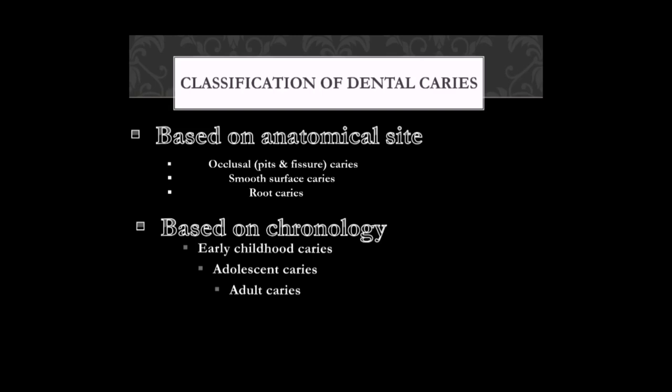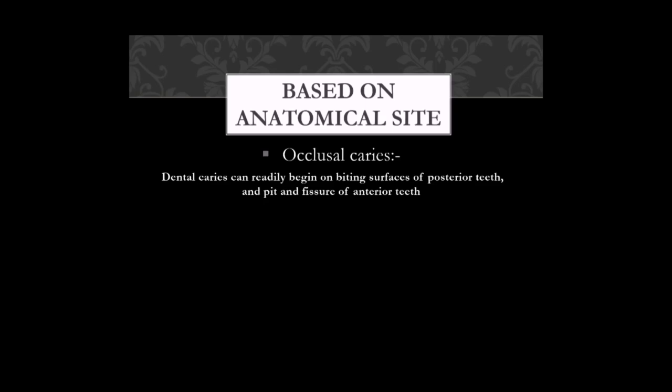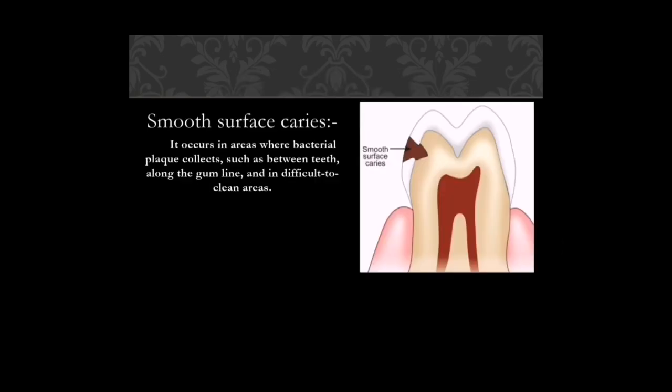Occlusal caries can readily begin on the biting surface of posterior teeth and in the pits and fissures of anterior teeth. Smooth surface caries occur in areas where bacterial plaque collects, such as between teeth, along the gum line, and in areas difficult to clean. A diagrammatic picture shows smooth surface caries on the cervical part of the tooth.